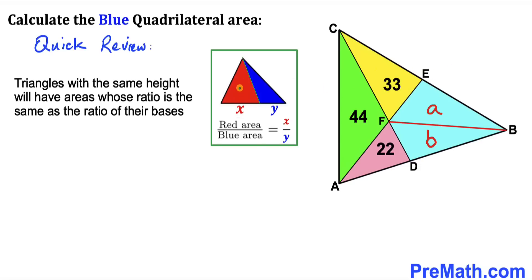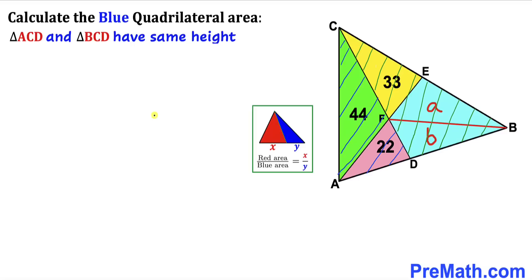We have two triangles — a red one and a blue one. The base of the red triangle is x units and the base of the blue triangle is y units. Both triangles share the same height. Therefore, the ratio of their areas is equal to the ratio of their base lengths.